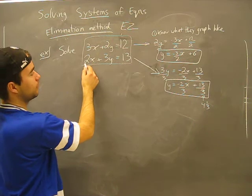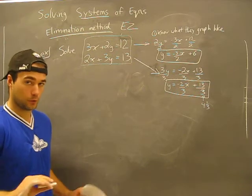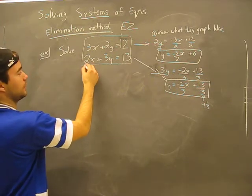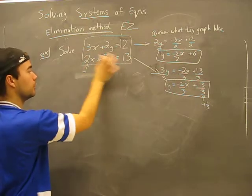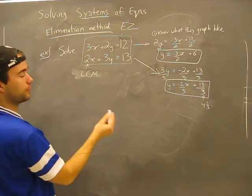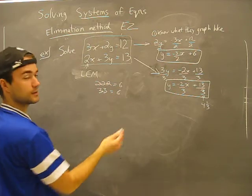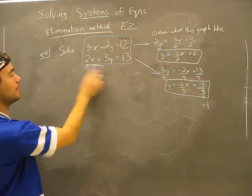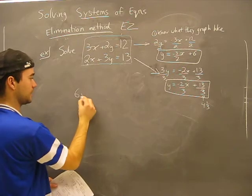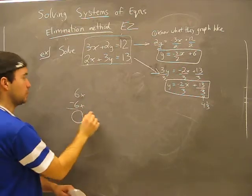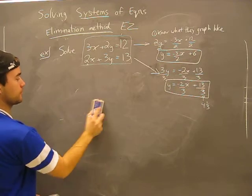I could multiply this whole thing by one point five, but you don't want to involve decimals or fractions if you can avoid that. What I'm going to do, because these are different numbers, is find the lowest common multiple of two and three. And the lowest common multiple of two and three is six. So I'm going to want to end up with six X in both equations so that I can subtract one from the other and eliminate it.